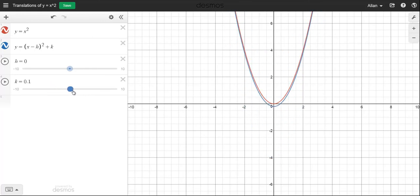So that's all the different translations. So for example, if I made h to be, let's say, three, there's three. And let's say I make k to be negative two.